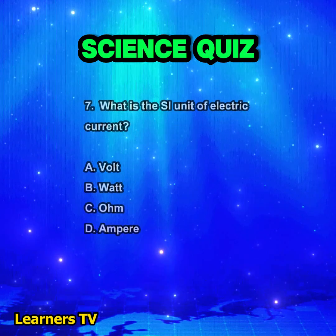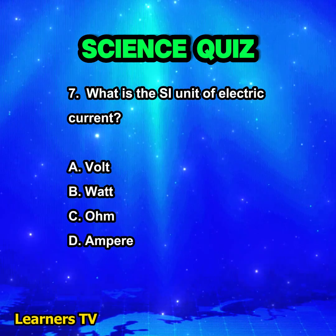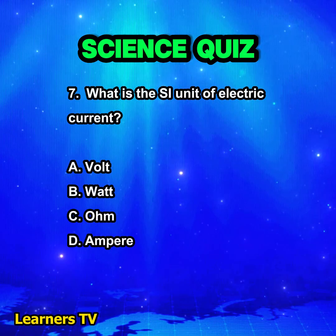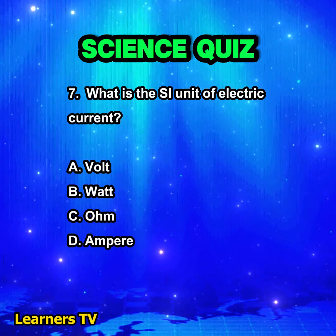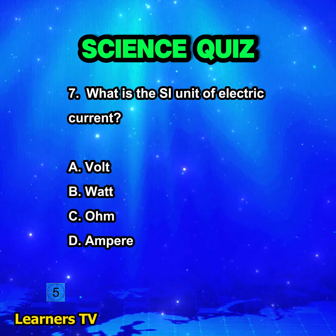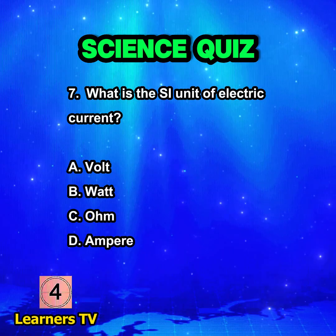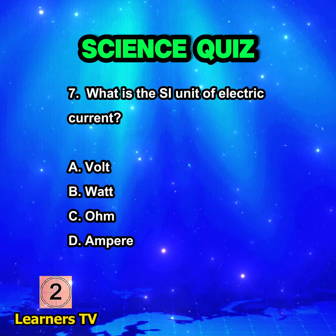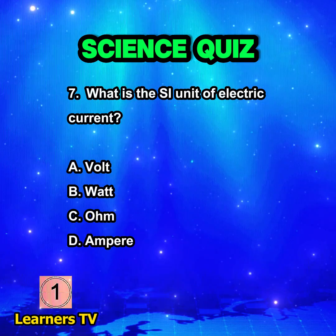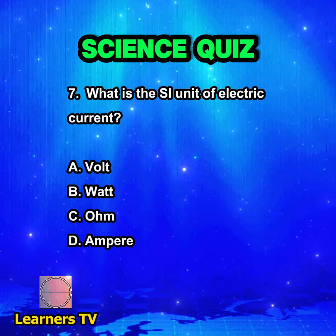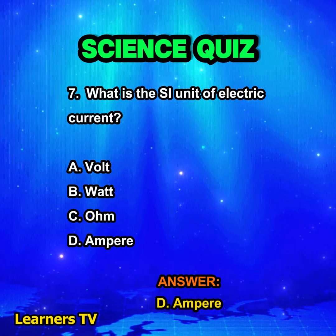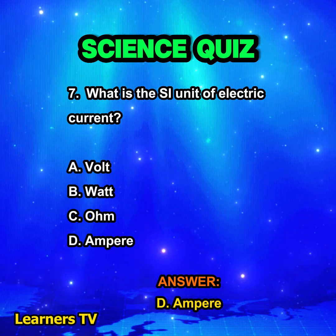What is the SI unit of electric current? A. Volt. B. Watt. C. Ohm. D. Ampere. The answer is D. Ampere.